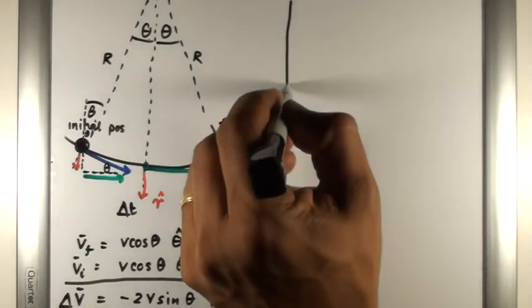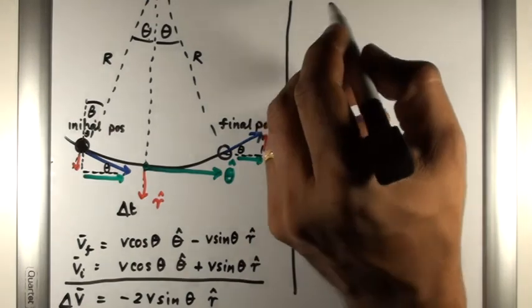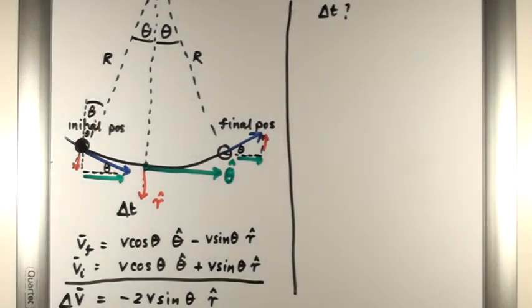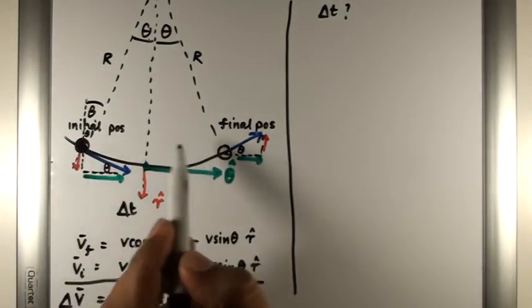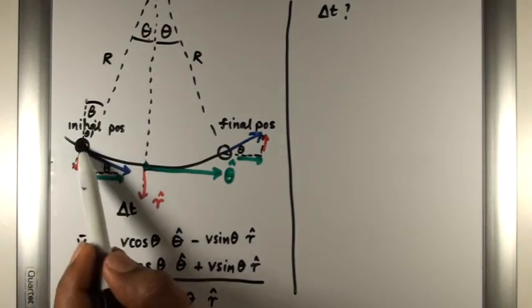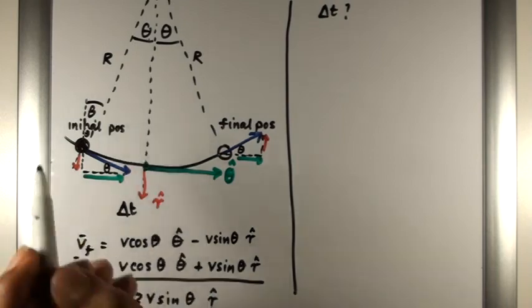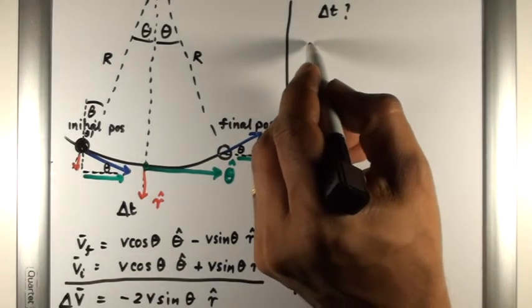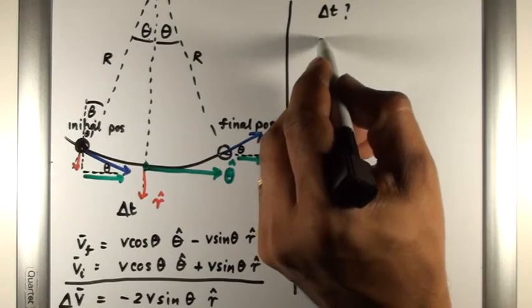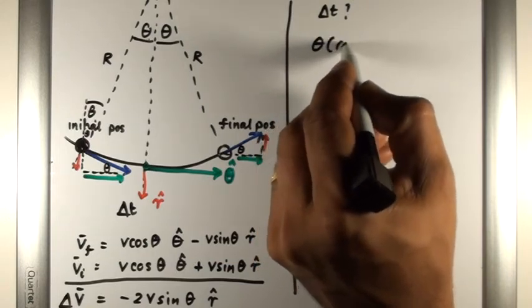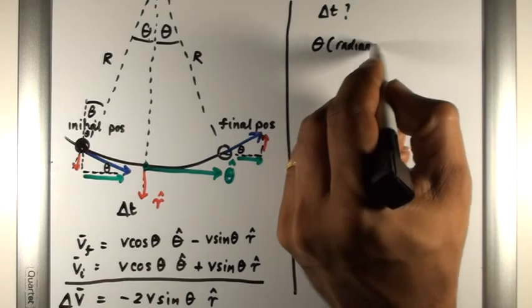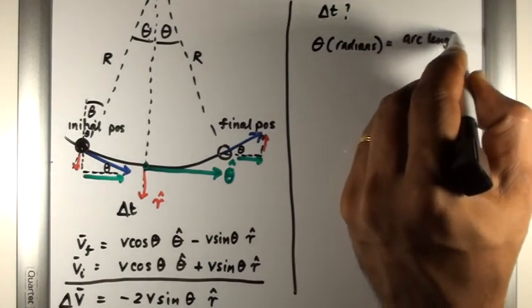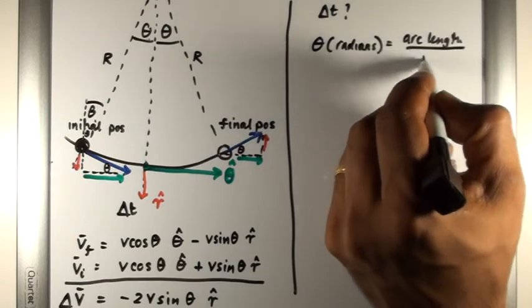If we wish to determine the acceleration, we need to know the time between which the object travels from here to there. Well, we know from math that theta in radians is equal to the arc length over the radius.